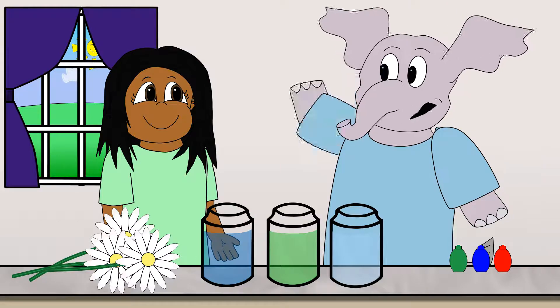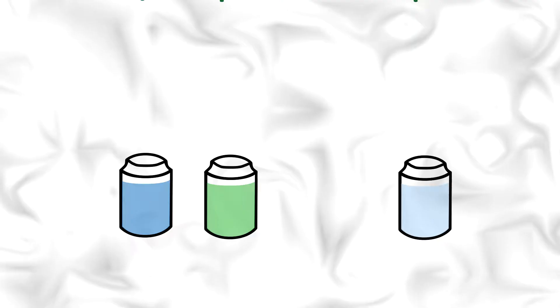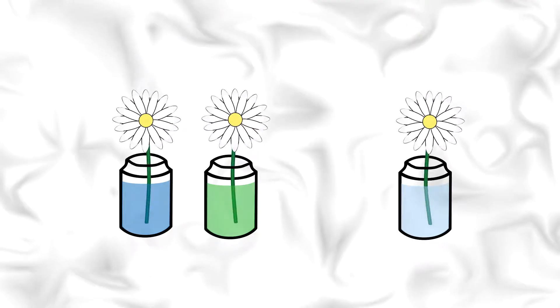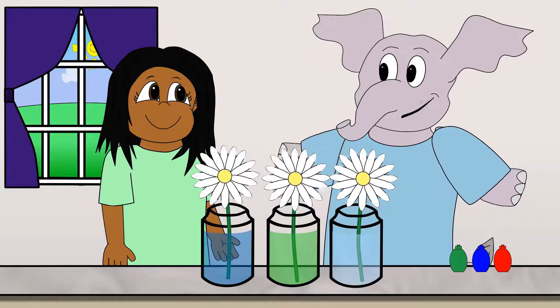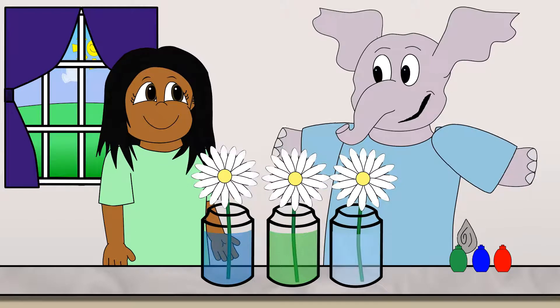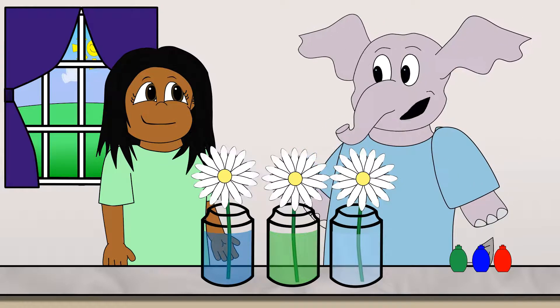What's a control? When you are doing an experiment, something that isn't changed is called the control. We didn't change this jar by adding food coloring. You can compare the jars you did change to the jar you didn't change to see the difference. I see. The control makes comparing changes easier. Now what do we do, Asha?